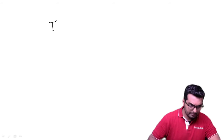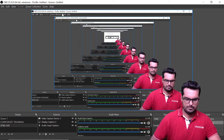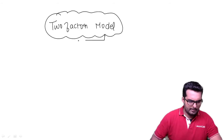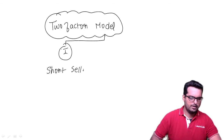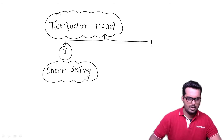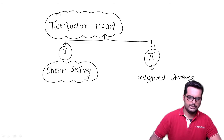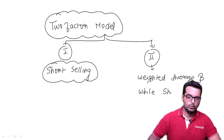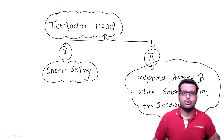Good morning everyone. In this video, we are going to start learning about the next concept called the two-factor model. Before we learn this, we need to learn two sub-concepts. The first is short selling, and after that we will learn how to find weighted average beta while doing short selling or borrowing. Only once we learn these will I be able to explain the two-factor model.